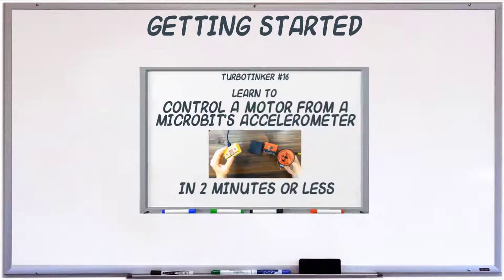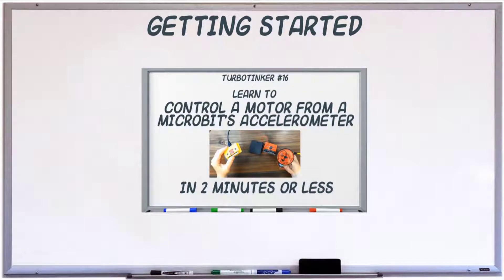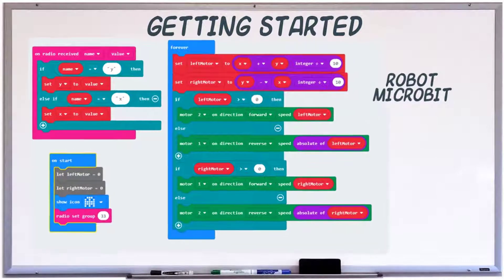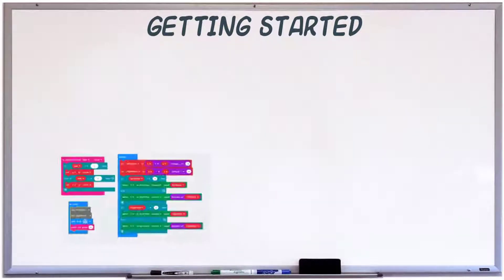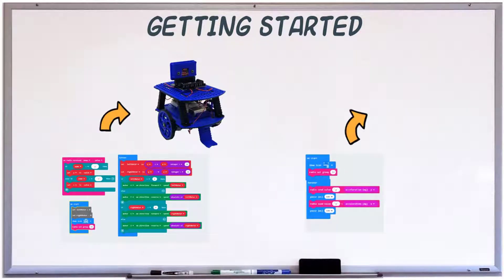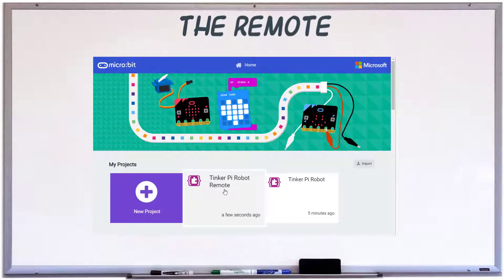We're going to start with the blocks we created in TurboTinker 16, where we learned how to drive a motor using the micro:bit's onboard accelerometer and radio. You can either recreate them from this image or download the hex from the link in the description.